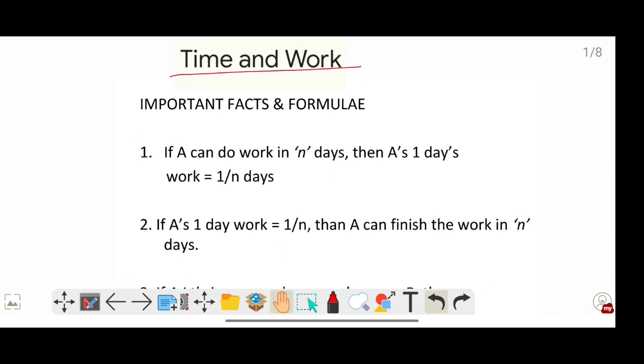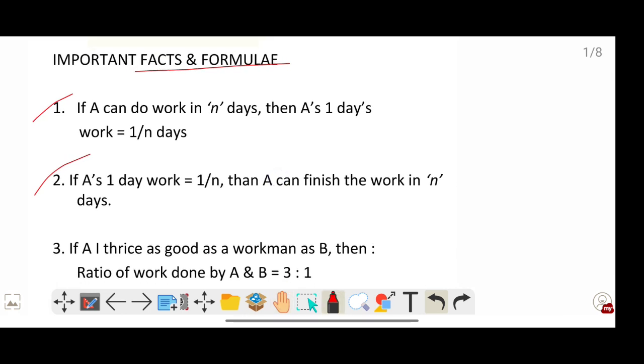Okay, so before we start, let's look at some important facts and formulas for time and work. The first one: if A can do work in n days, then A's one day work will be 1 by n. For example, if A can finish a work in two days, A's one day work will be 1 by 2. So A's one day work is 1 by n, where n denotes the number of days.